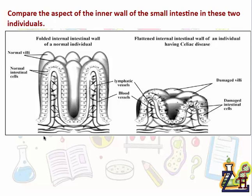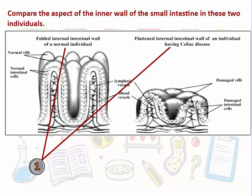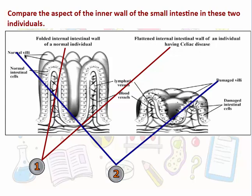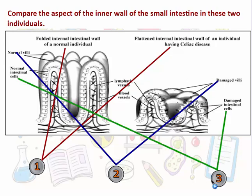If we notice the figure, we see there are three things different between both items. First, the internal wall — here it's folded, and here it's flattened. The second thing is the villi — here they are normal, and here they are damaged. The final thing is intestinal cells — in the normal individual they are normal, and in the sick individual they are damaged.